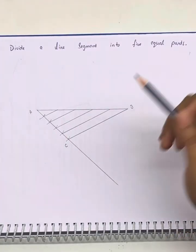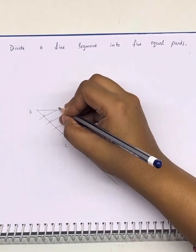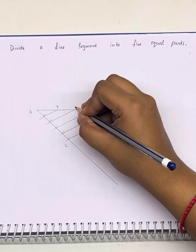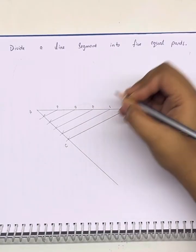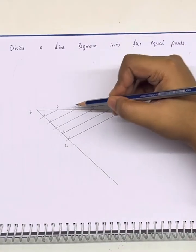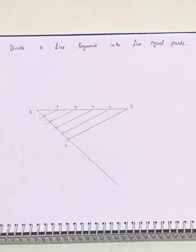This divides our line in five equal parts P, Q, R, S - one, two, three, four, and five equal parts.